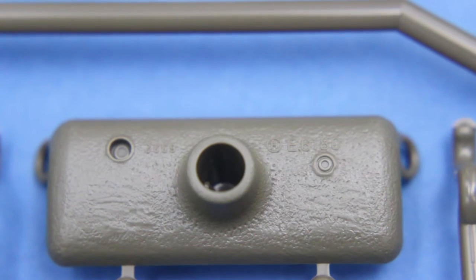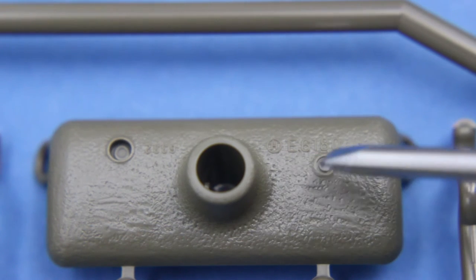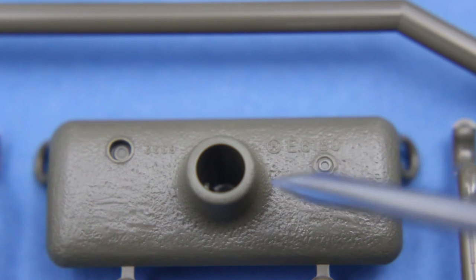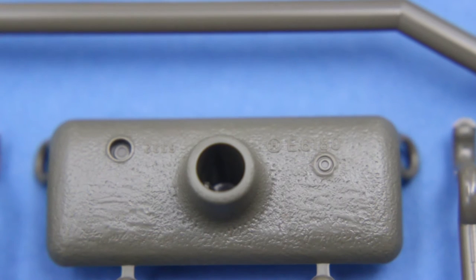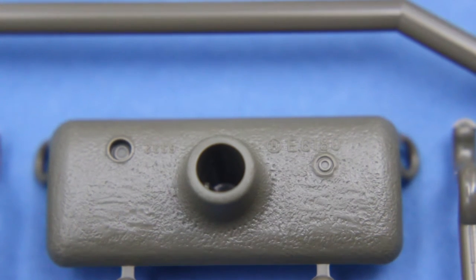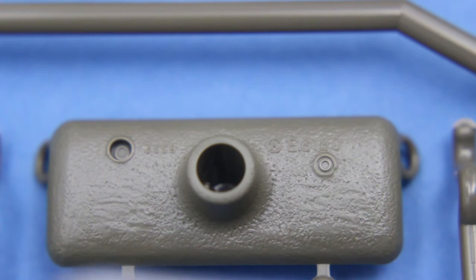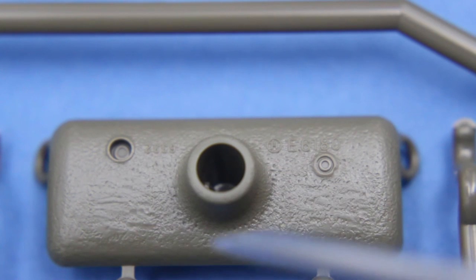Now up close you can see the gun mantlet has a very nice cast texture. There are some proper casting numbers on here. These seem correct as far as I can tell. Now the coaxial port for the 30 cal is a little basic. It could do with being drilled out. But the gunner's sight looks fairly reasonable here.